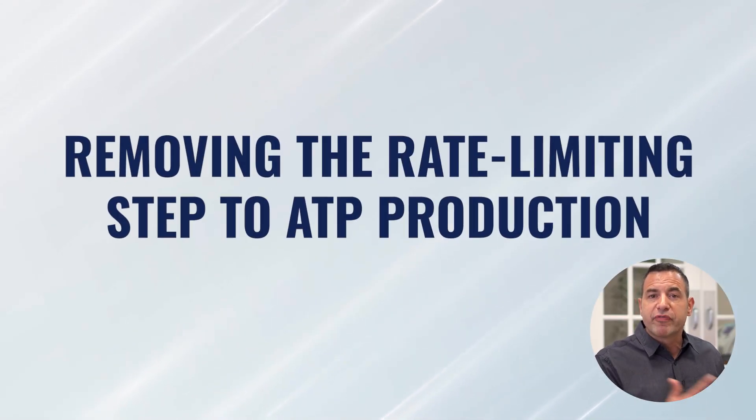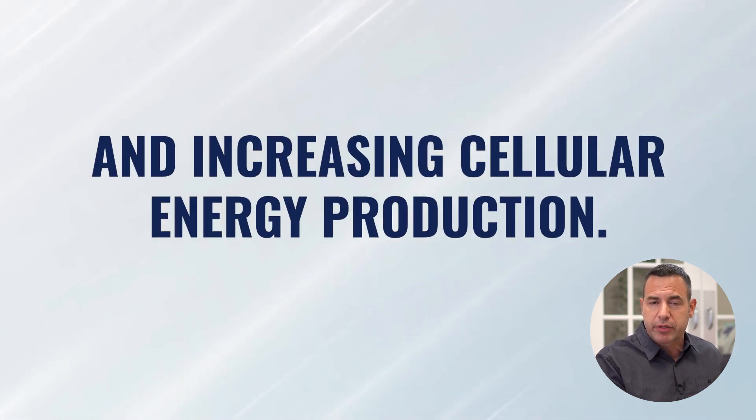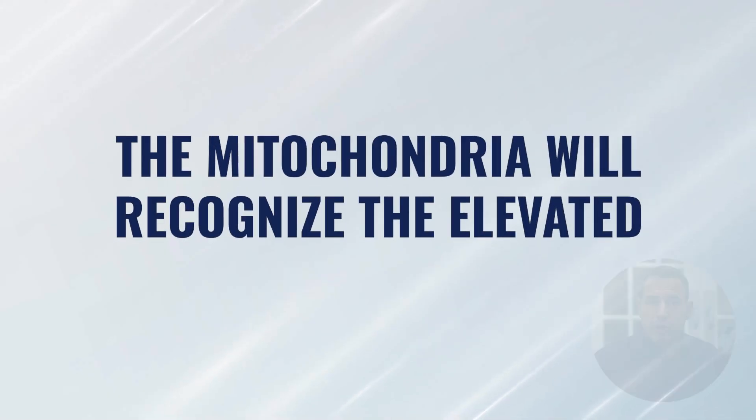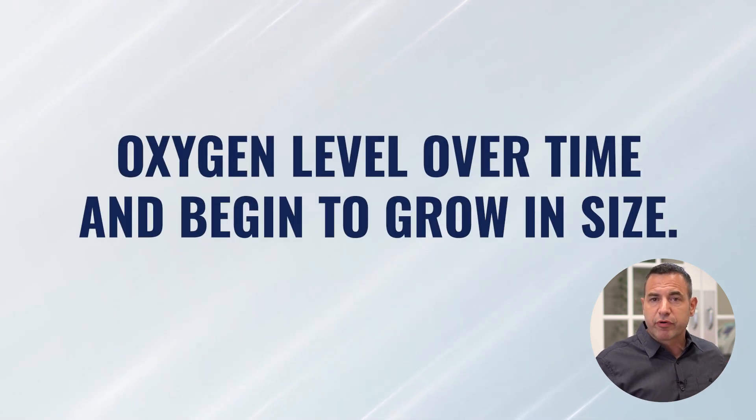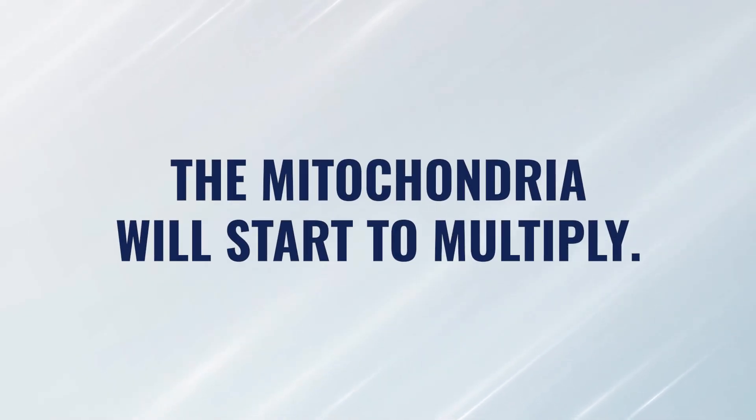With hyperbaric oxygen, it has multiple effects on the mitochondria. Number one, right away — literally within the first few minutes of being in a chamber — we're already driving more oxygen to the mitochondria, removing that rate-limiting step to ATP production, and increasing how much cellular energy those mitochondria can make. Next, if we repeat this cycle repetitively over a course of weeks and months, the mitochondria will recognize this elevated level of oxygen over a prolonged period and will start to swell or grow in size, trying to create the capacity to utilize all of this increased oxygen. Lastly, the mitochondria will start to multiply — your body will increase mitochondrial density, the number of mitochondria, in order to make use of all of this oxygen being driven into the body.